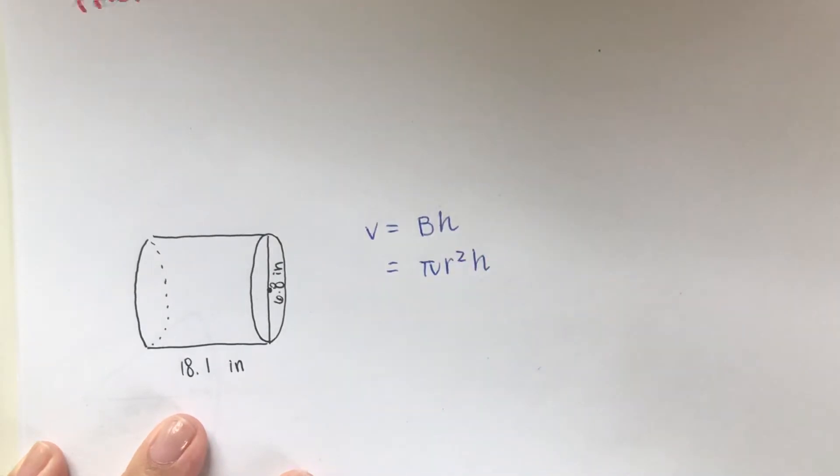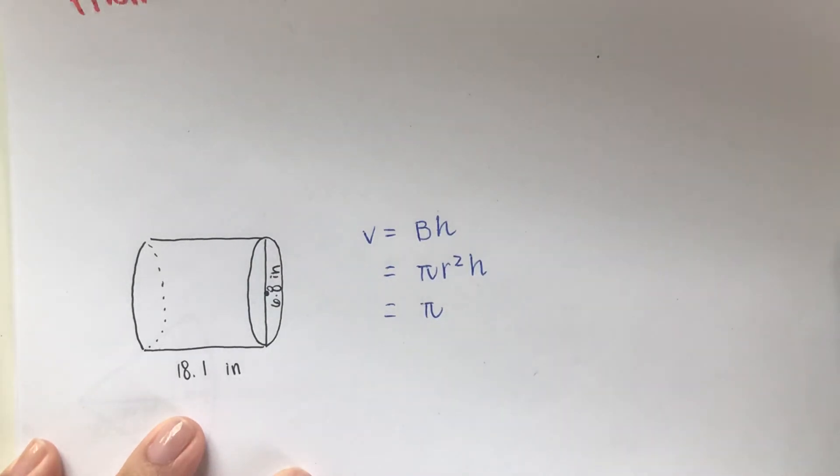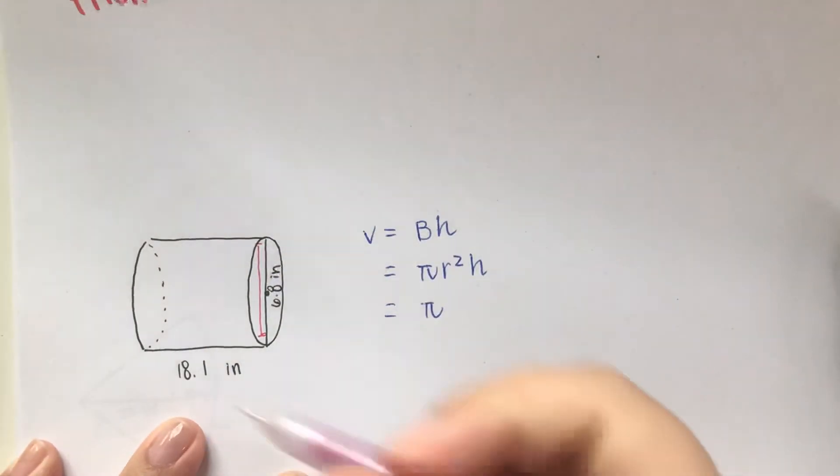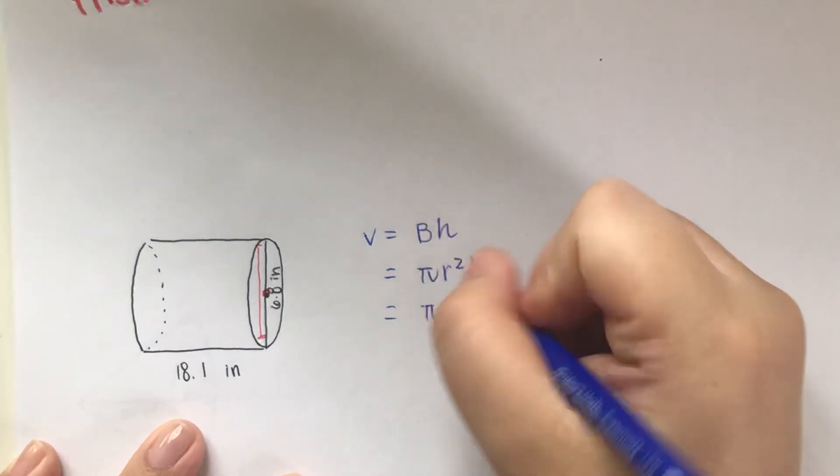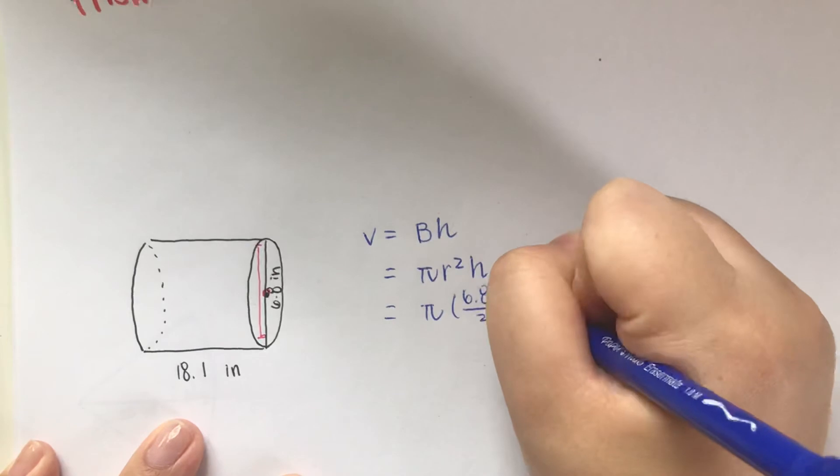It's area of the base multiplied by the height, or people memorize it by πr²h. Now π stays as π. Radius—they gave me the 6.8, this is the diameter, but I only want half of it. So that means I need to divide 6.8 by 2, raise to the second power.